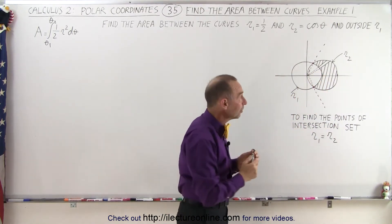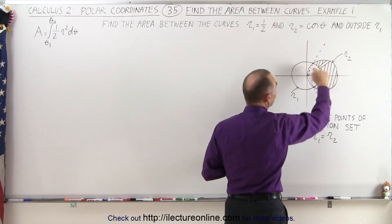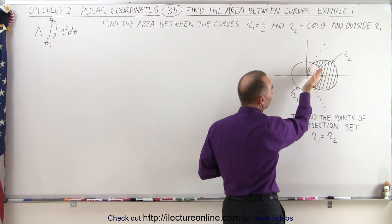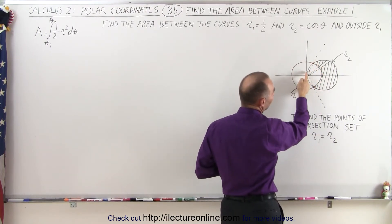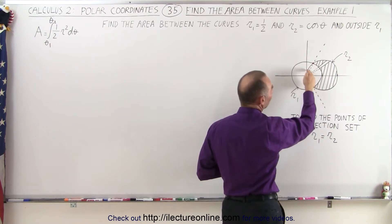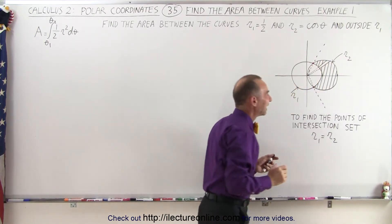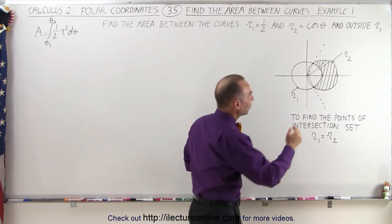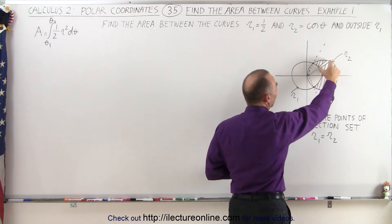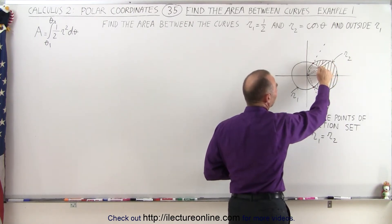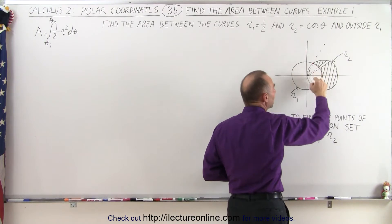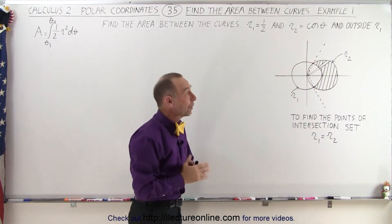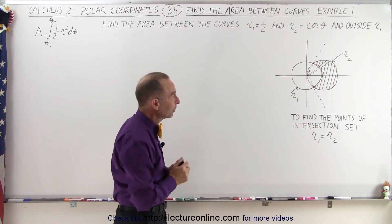We also need to be careful that the area element doesn't cross over between a different set of lines. For example, if we went past this angle, a small area element would only cut across one curve and not the other function, so you would not be able to integrate past those two points. But between the two points, the distance only goes through the function defined by r1, which allows us to integrate without needing multiple integrals.